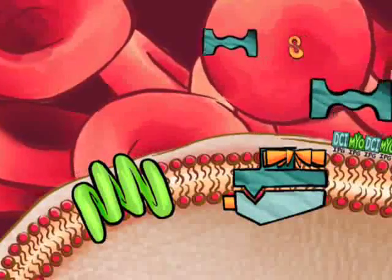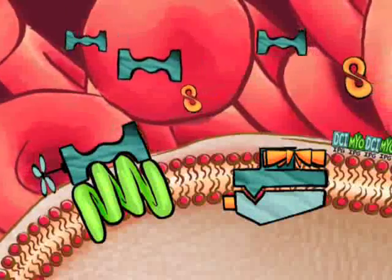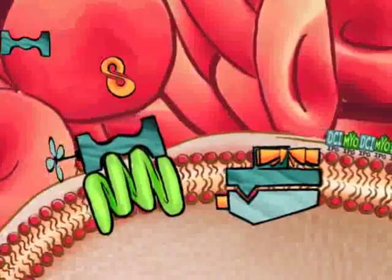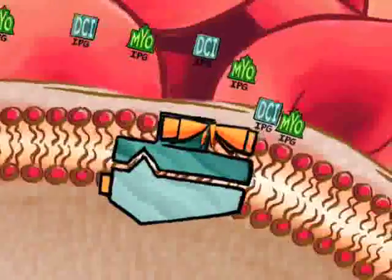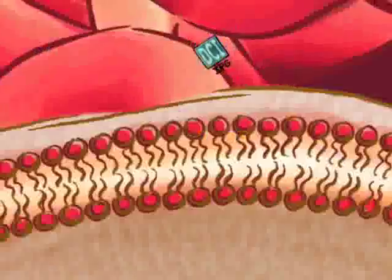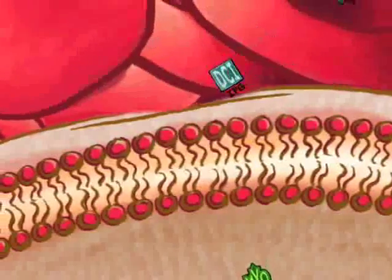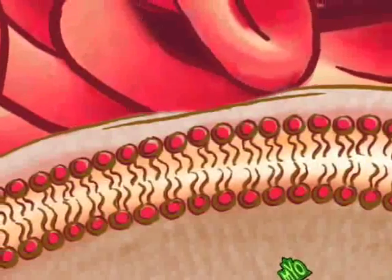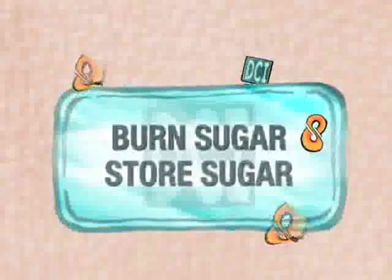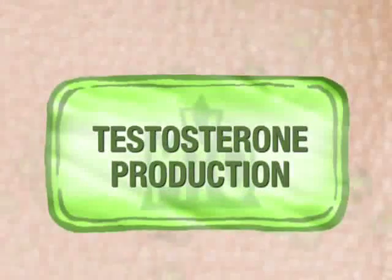In healthy individuals, the insulin then binds to its receptor on the outside of the cells. This activates an enzyme that cleaves the bond between DCI-IPG, or MYO-IPG, and the cell. These both can then go into the cells — in other words, they let the cell know that it needs to respond to the insulin. For DCI, this means burning or storing the sugar. For MYO, this means producing testosterone.